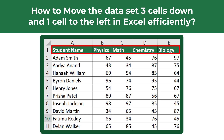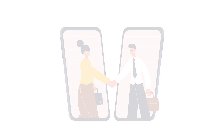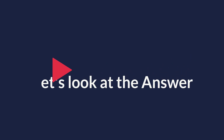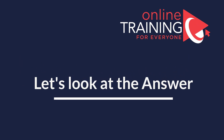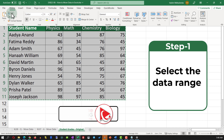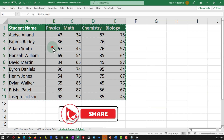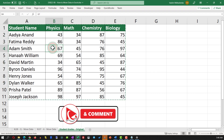Let's look at a sample question from the recent test: how to move a data set three cells down and one cell to the left in Microsoft Excel efficiently? You are presented with a data set of student names, grades in physics, math, chemistry, and biology. There are multiple ways to move data in Excel. One of the easiest is to select the data set, use the Cut function on the Home tab, identify the new location, and paste the data there.